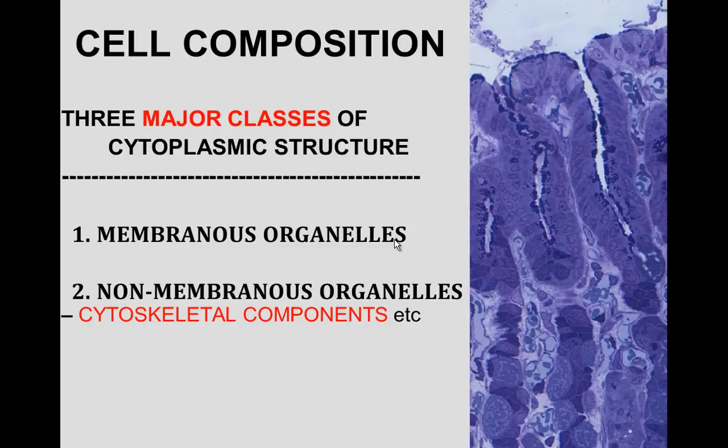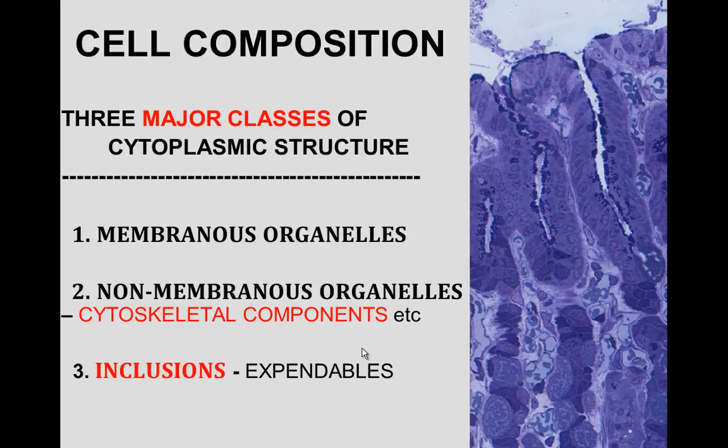In terms of the major classes of cytoplasmic structures, of course we've got membranous organelles, and the non-membranous organelles are the cytoskeletal components we just talked about — microtubules, microfilaments, and intermediate filaments. There's also another component, and that's inclusions.